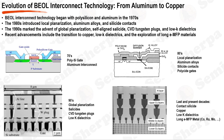The 1990s brought global planarization, self-aligned silicide, salicide, chemical vapor deposition, CVD, tungsten plugs, and low-K dielectrics. Global planarization further improved wafer surface flatness, while salicide technology allowed formation of silicide on the source/drain regions of the transistor, reducing contact resistance. CVD tungsten plugs were used to fill vias and contact holes, and low-K dielectrics were introduced to reduce capacitive coupling between interconnect lines. In recent years, the transition to contact silicide and copper with low-K dielectrics has been a major shift — notably, contact silicide selectively forms silicide only at the bottom area of the contact, unlike salicide which forms over the entire source/drain region.